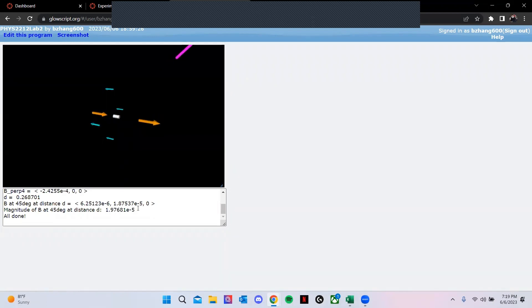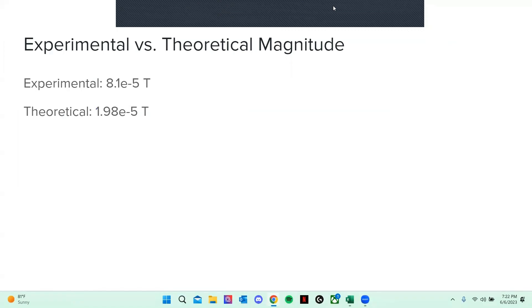Here we can see the theoretical magnitude of a magnetic field with a magnetometer at an angle of 45 degrees. Comparing the theoretical and experimental magnitudes, there is quite a large difference.